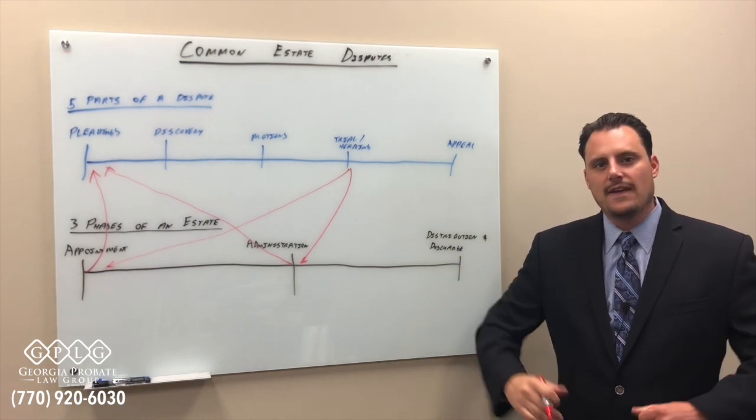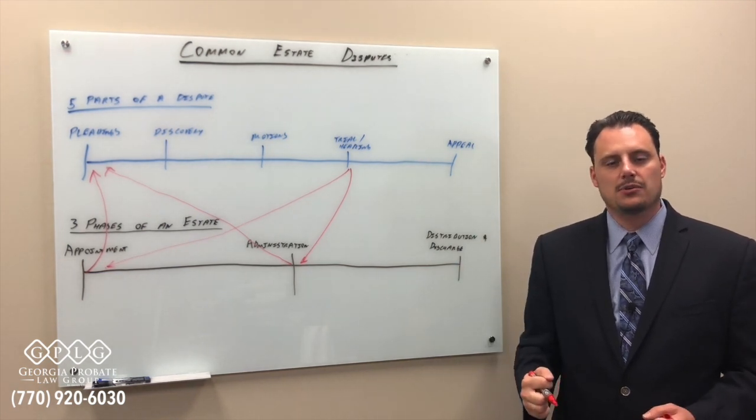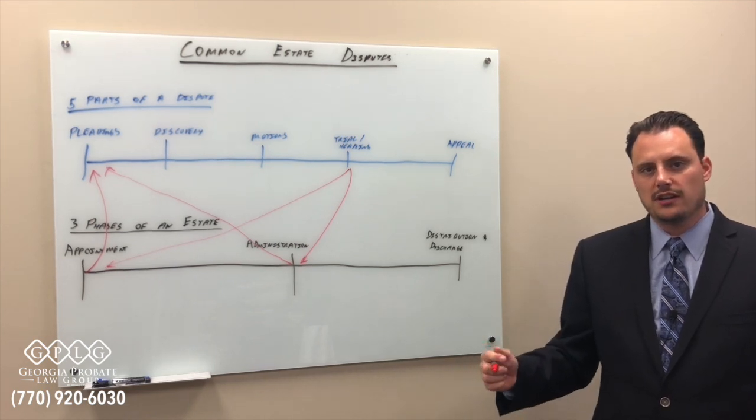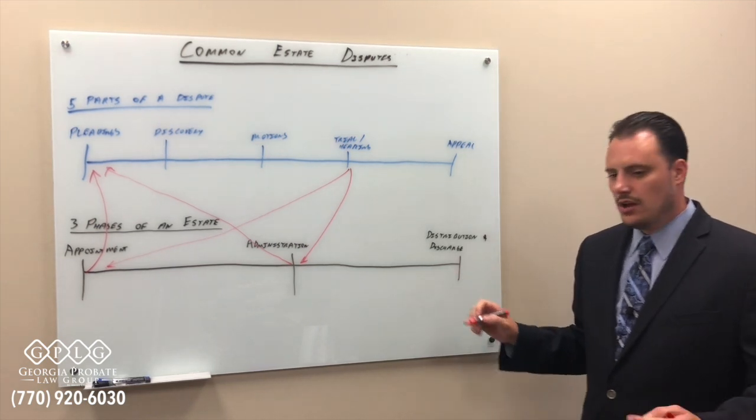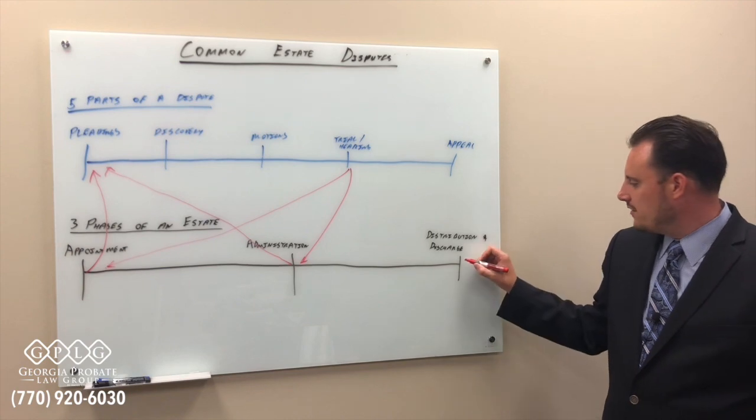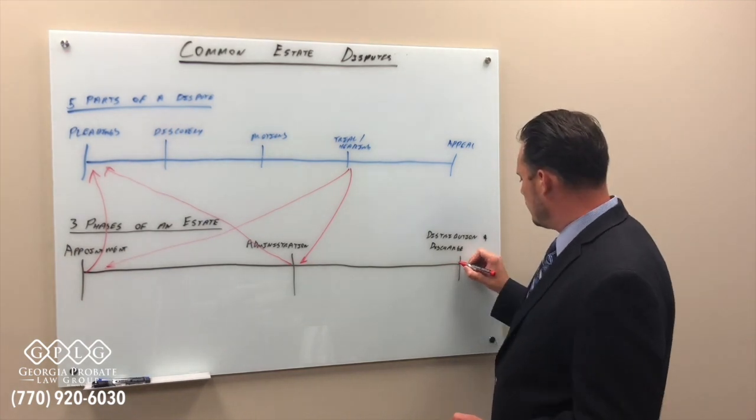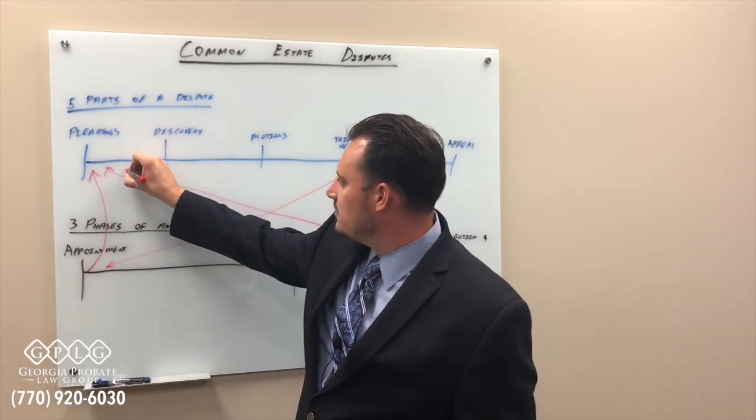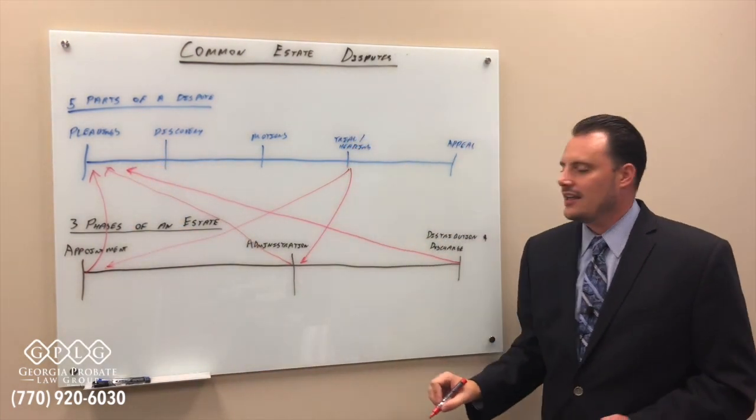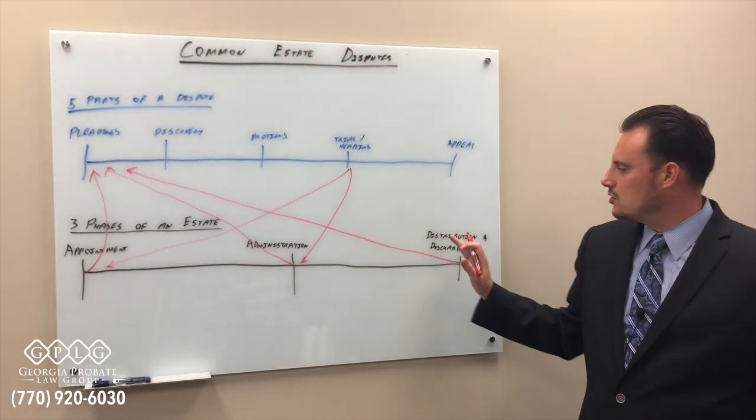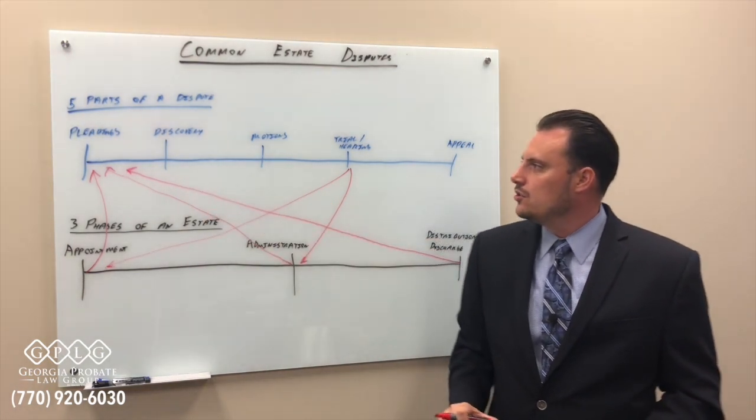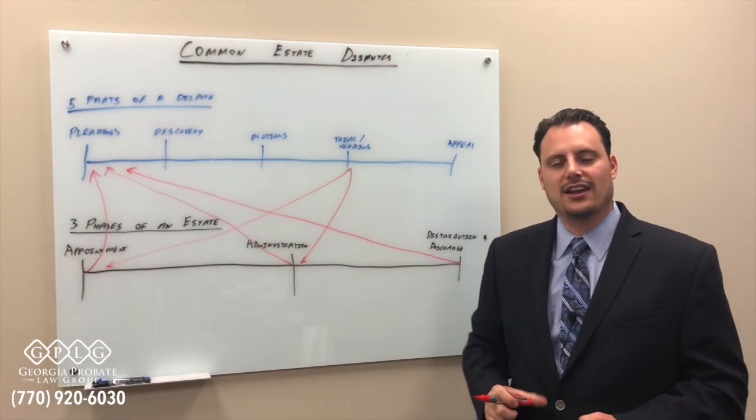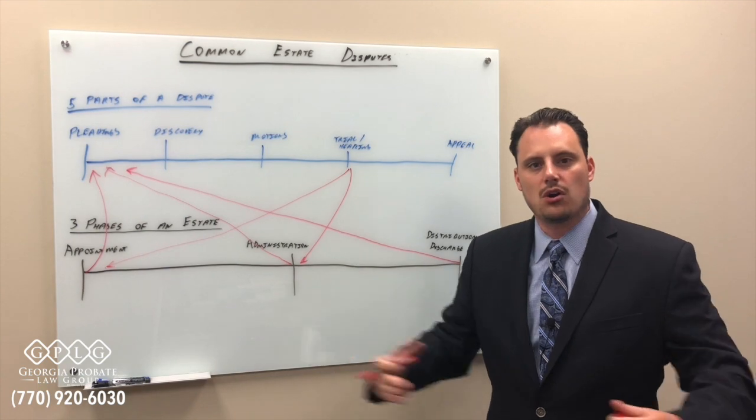And when that petition is filed, all parties are given an opportunity to object to it if they have not consented to it. So let's say we have an heir of the estate that objects to our discharge petition and they say the executor hasn't done everything correctly. I think mistakes were made. And so that launches us back to the pleadings phase with whatever allegations, whatever those mistakes are that are alleged.